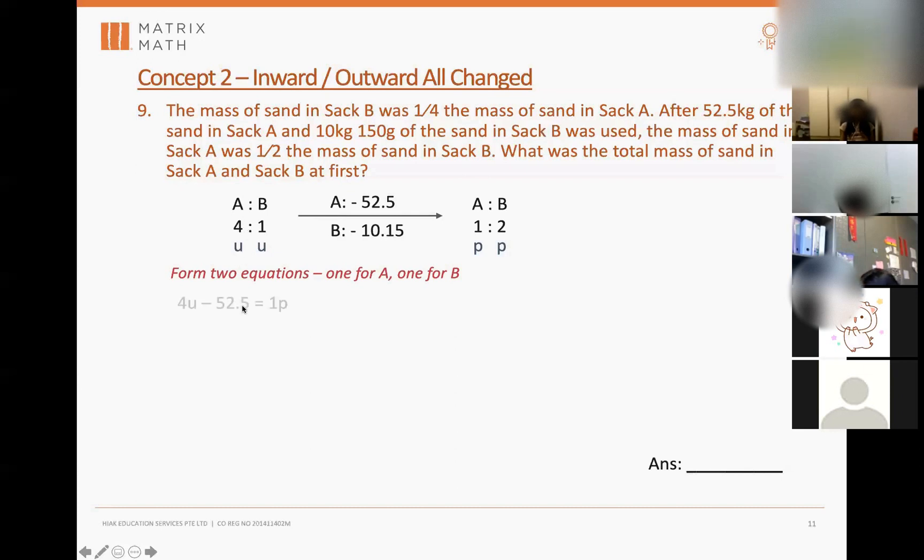One u minus 52.5 kg. It's 4u, very good, it's one part. So it must match correctly. Shen, how about B? Can you make a number statement for B? Joshua, give it a try. One unit minus 10.15 equals 2p. Okay, good.